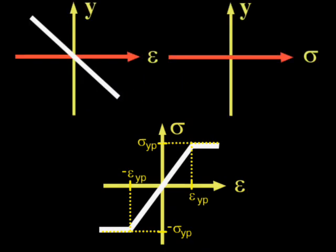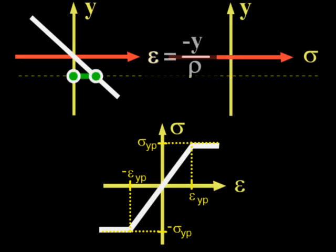If the radius of curvature is known, then the strain can be found at any point using the equation epsilon equals minus y over rho.